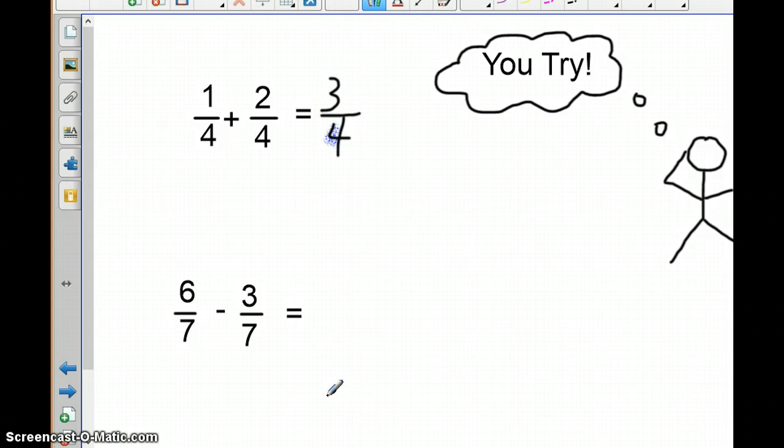Okay, let's look at this next one. This is a subtraction problem, but the rules still apply. As long as the denominators are the same, it's going to also stay the same in our answer. Okay? So we went ahead and wrote our 7 in the denominator, and then all we have to do is subtract the numerator. 6 minus 3 is 3. So 6 sevenths minus 3 sevenths is 3 sevenths.